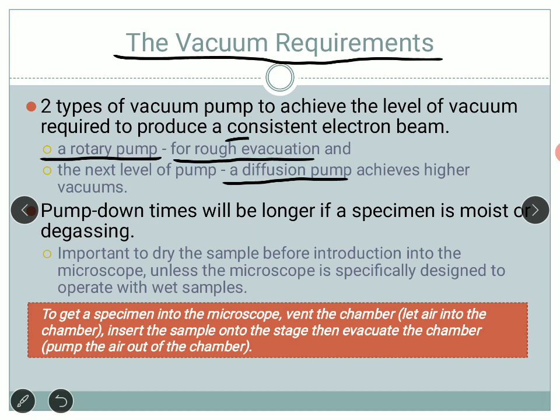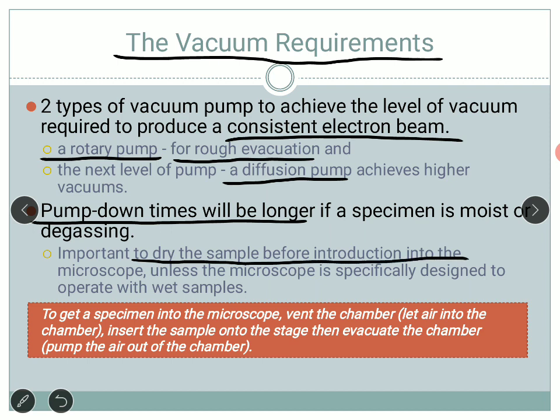This is very important for producing a consistent electron beam. The pumping time is important because if the sample is moist, the pump time can be longer — it will take longer to pump out all the air from the system. We need a sample which is completely dry. However, if you are studying wet samples such as biological samples, the microscope design itself is different. An environmental scanning electron microscope can read wet or biological samples.